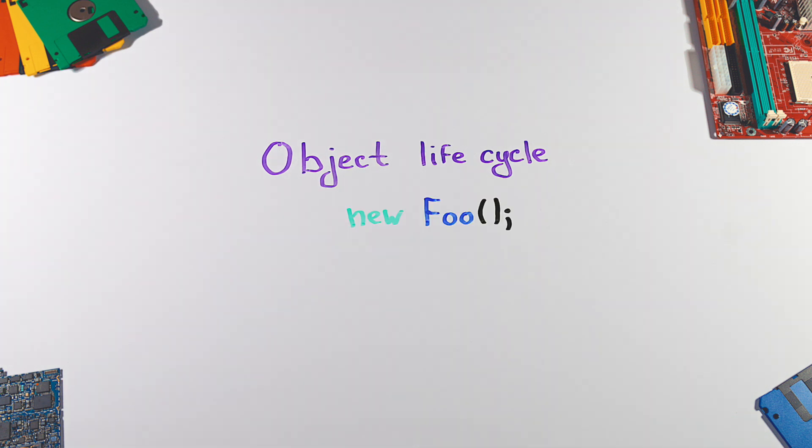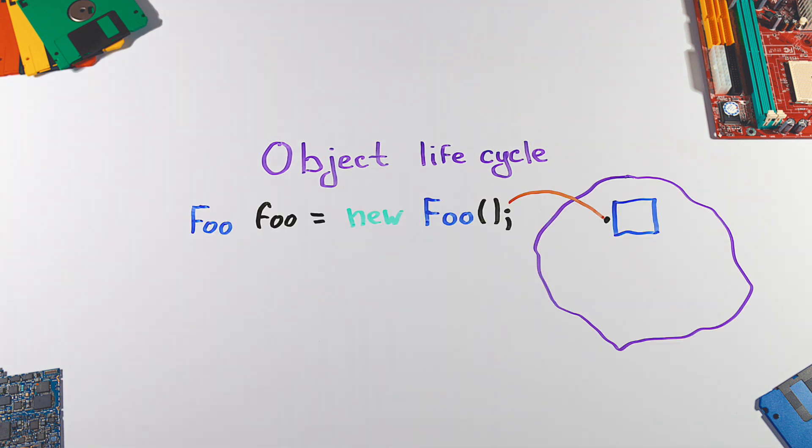When you create an object and you assign it to some variable, its termination isn't tied up to the lifetime of a given variable. This means that with the destruction of the variable, only a reference to the object is destroyed, but the object itself is still allocated in the memory.